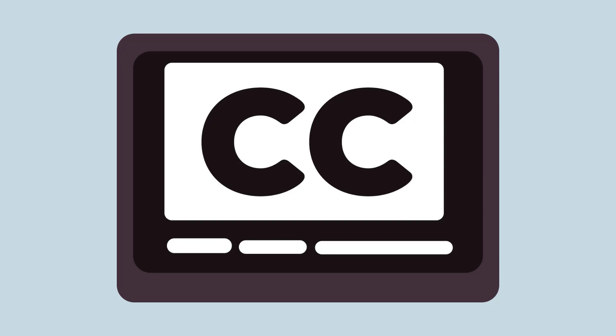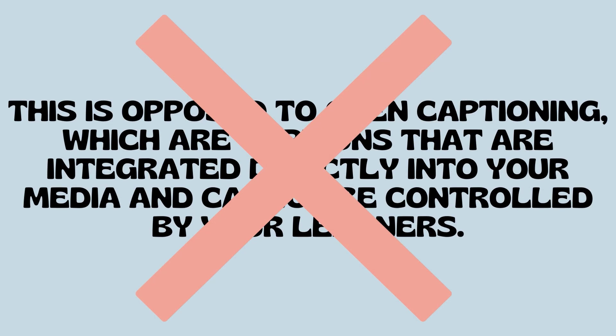Closed captions are captions that can be turned on or off by your learner. This is opposed to open captioning, which are captions that are integrated directly into your media and cannot be controlled by your learners. Including captions might mean that some of your learners choose to use both the text and audio simultaneously, but the downsides to them making that choice are minimal compared to the benefits of making sure that every learner can access your content in at least one way.